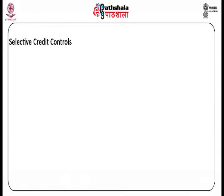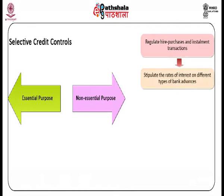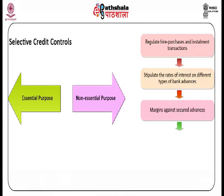Selective credit controls operate on the distribution of total credit. They regulate the use of credit by discriminating between essential and non-essential purposes, may regulate hire purchases and installment transactions, can stipulate rates of interest on different types of bank advances, and may prescribe margins against secured advances. These methods prevent speculation and hoarding of commodities.